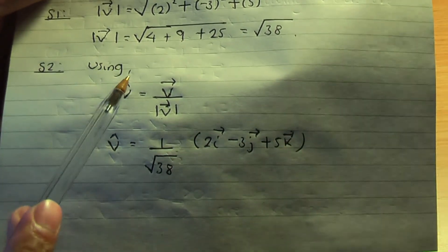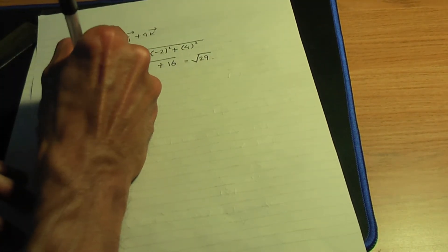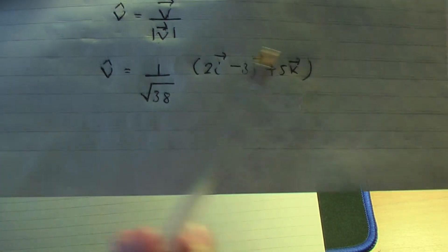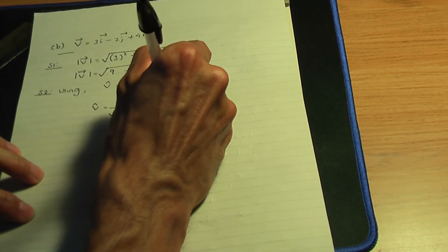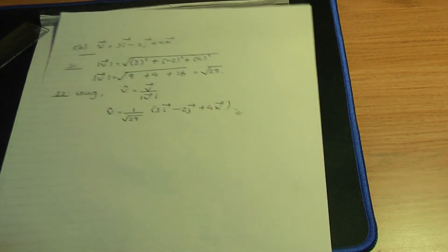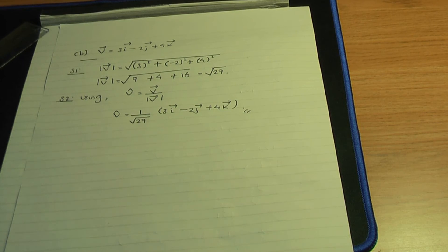Step two: use the formula — divide the vector by the modulus from step one. So v-hat equals 1 over root 29, multiplied by the vector 3i minus 2j plus 4k. That explains the method in part b, and that ends the video. I hope you found this video helpful, and I hope to see you in the next video. Thank you.